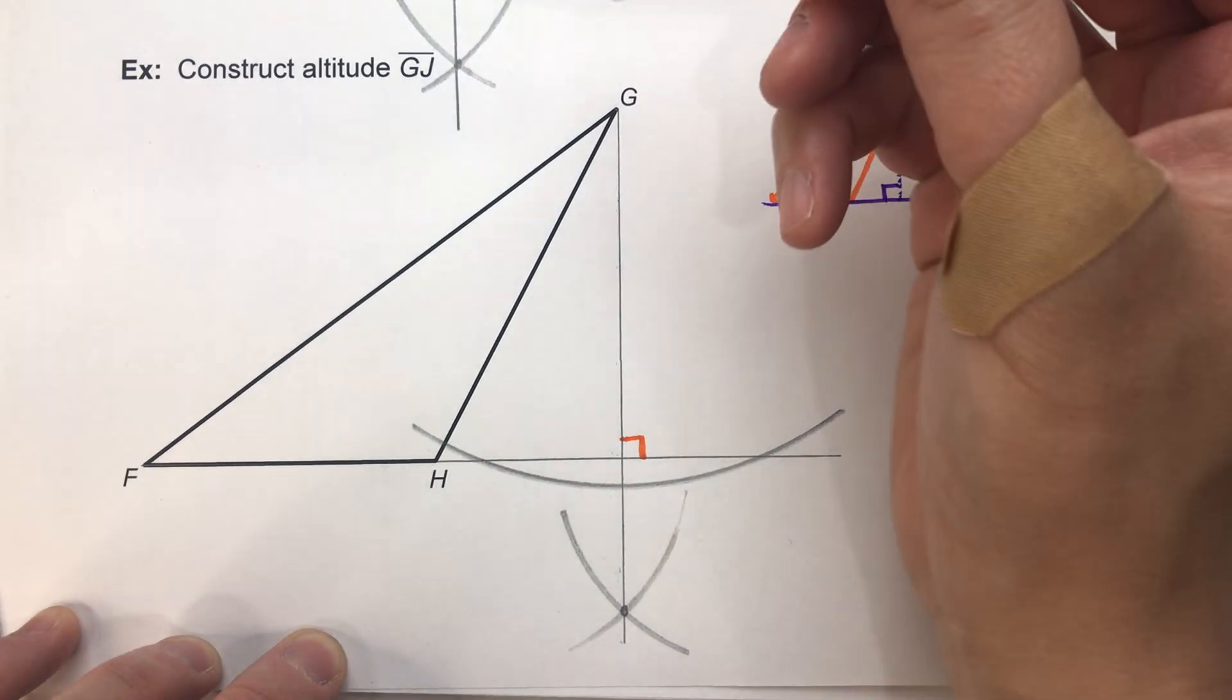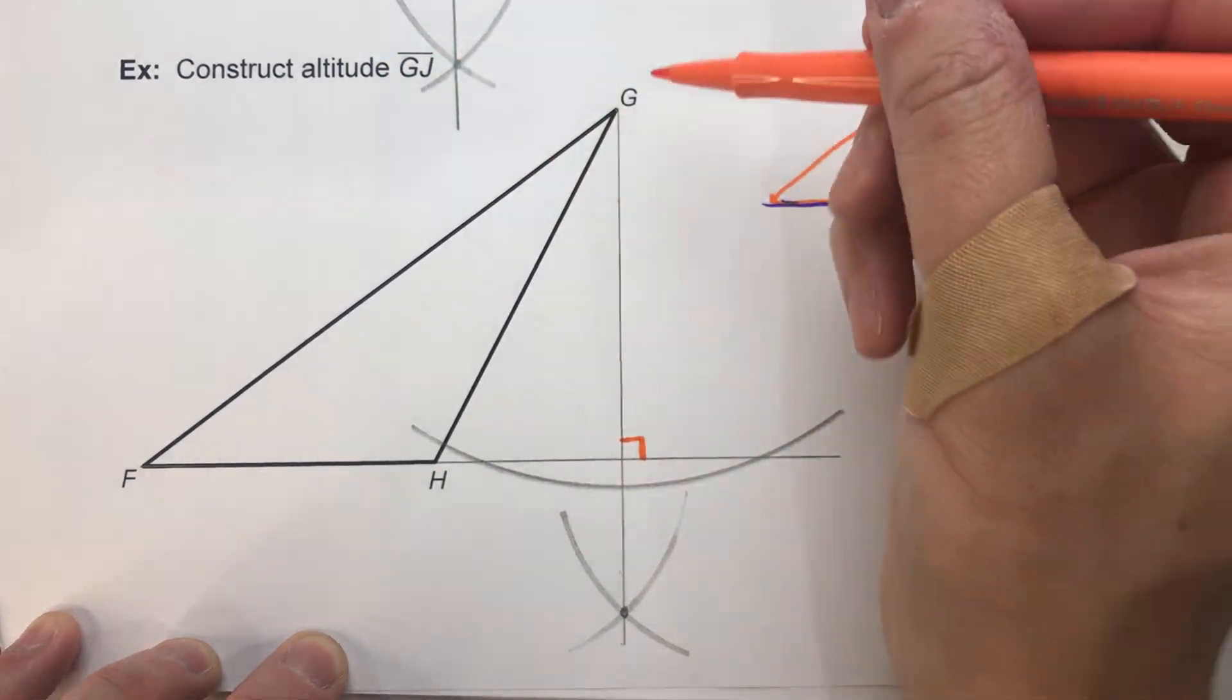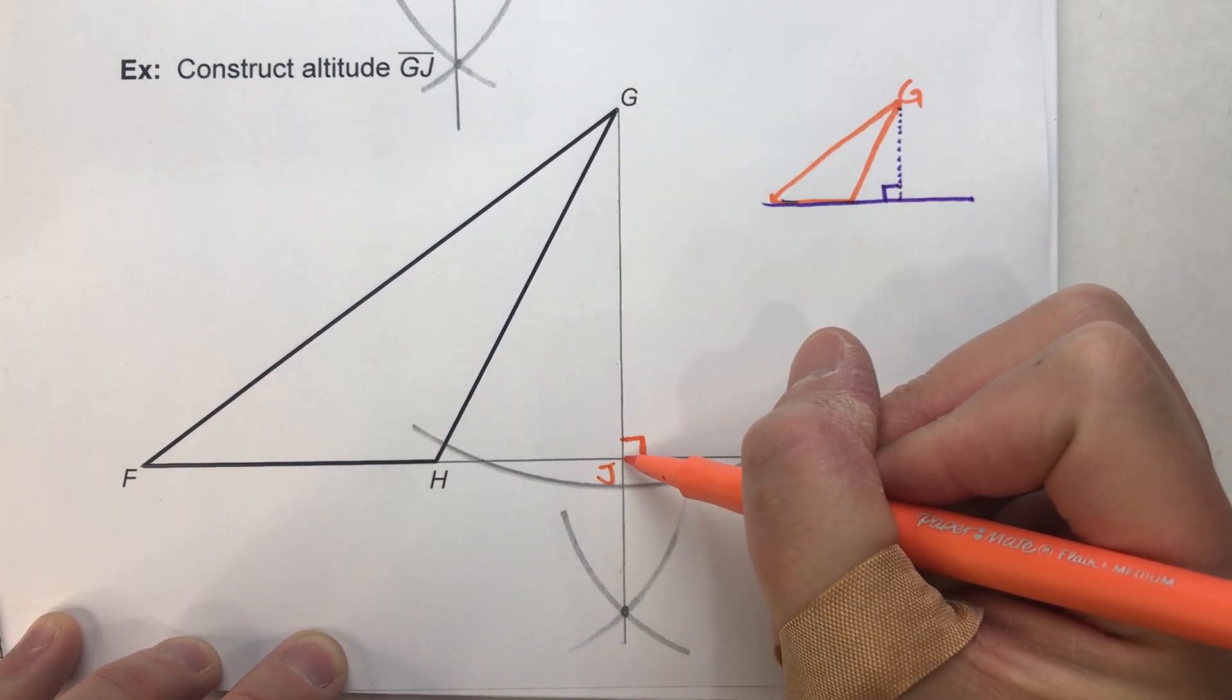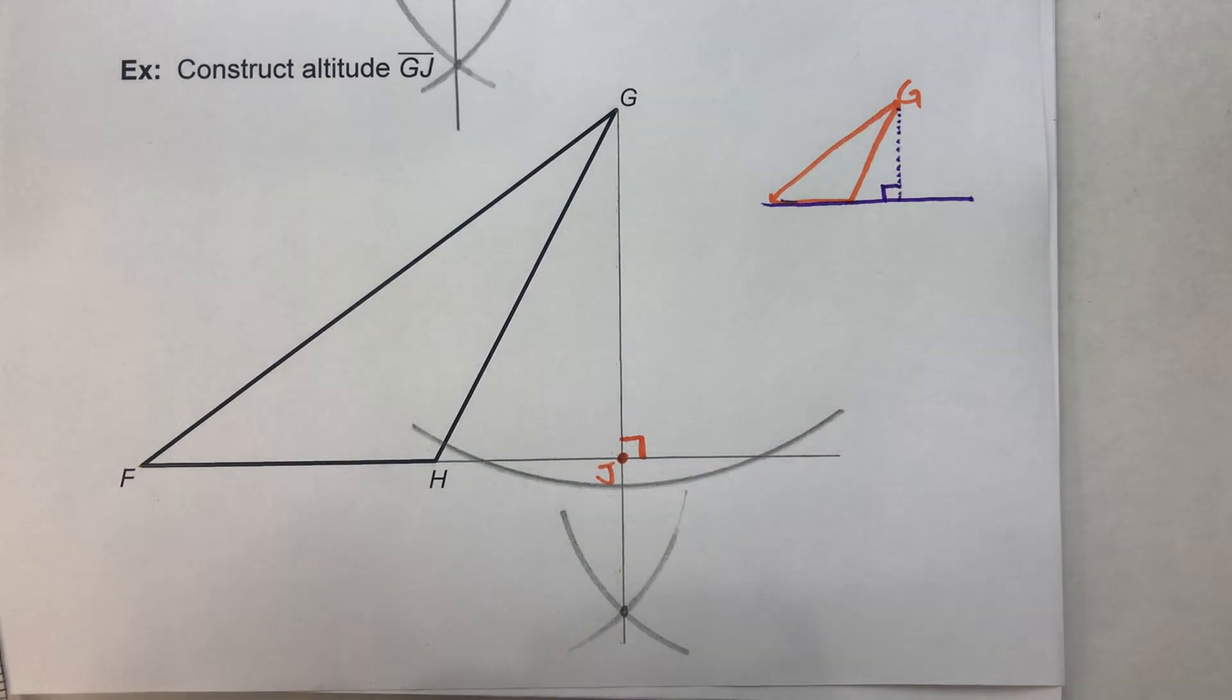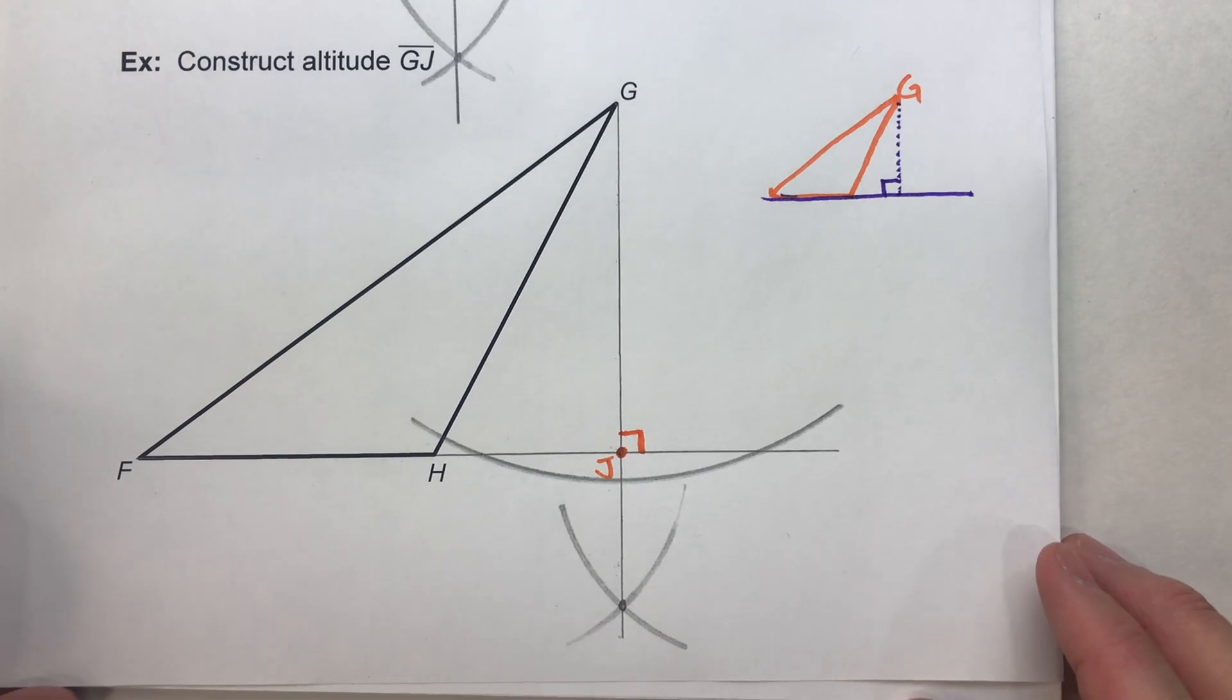All we need to do is label that point because altitude GJ is what we want. So this is G. This point here will be our J. And there's our altitude.